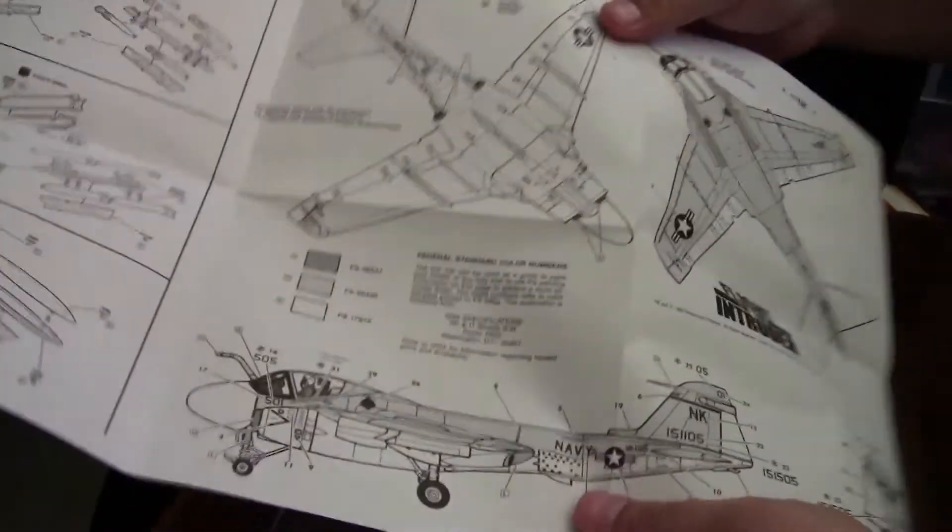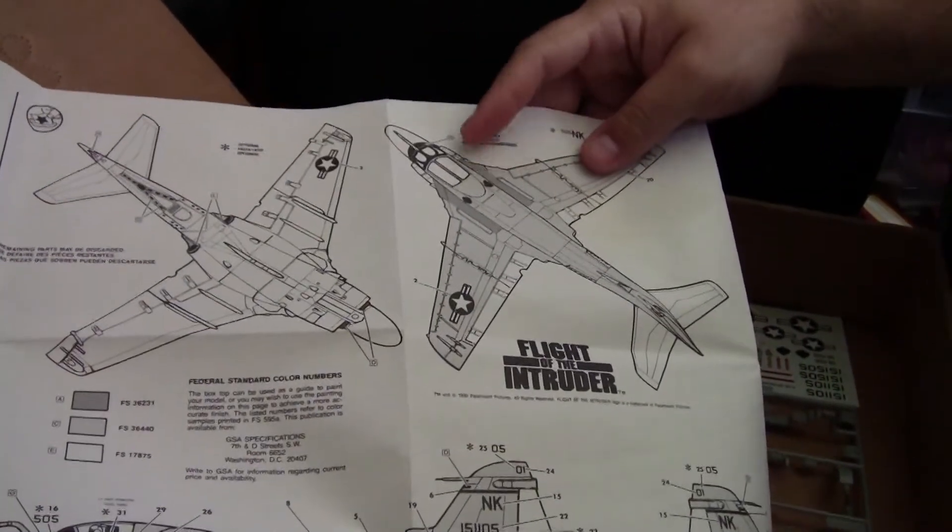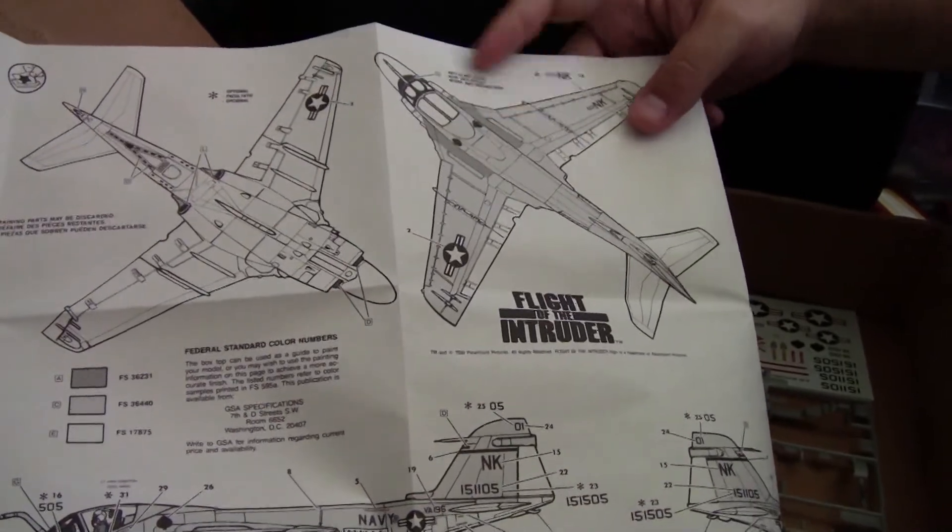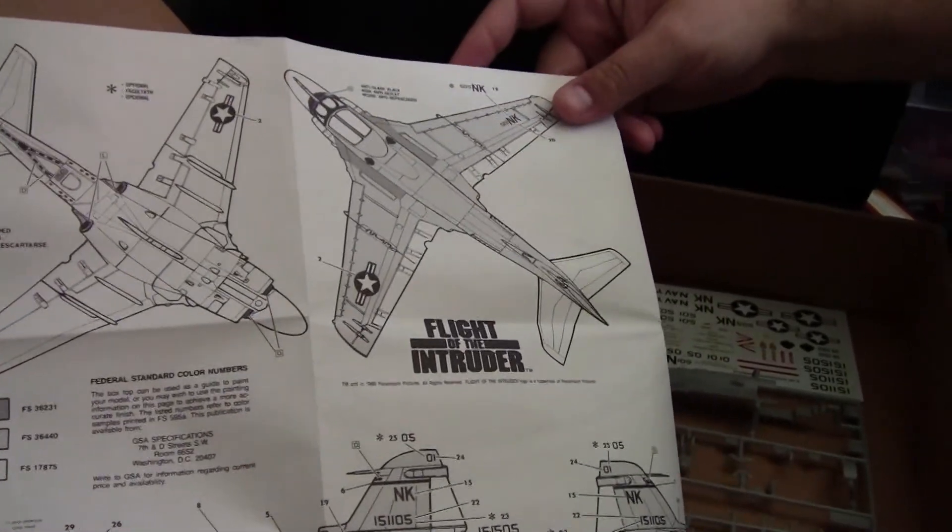I think some of this is just safe space. But overall, it should go together fairly easily. Once you do get it built, you do technically only have one paint scheme, albeit for different aircraft in a single squadron.